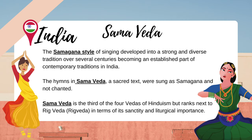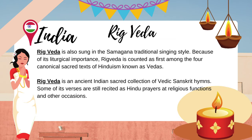Singing based on a set of pitches was popular even from the Vedic times. The Samagana style of singing developed into a strong and diverse tradition over several centuries, becoming an established part of contemporary traditions in India. The hymns in Sama Veda, a sacred text, were sung as Samagana and not chanted. Sama Veda is the third of the four Vedas of Hinduism but ranks next to Rig Veda in terms of its sanctity and liturgical importance. Rig Veda is an ancient Indian sacred collection of Vedic Sanskrit hymns, and some of its verses are still recited as Hindu prayers at religious functions.